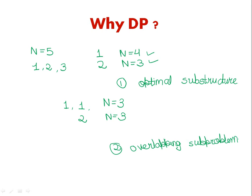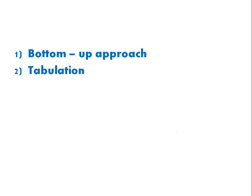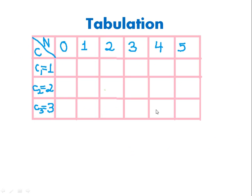This problem has both properties of DP, so we'll use dynamic programming here with a bottom-up approach and perform tabulation. Each column in the table corresponds to a sub-problem. To solve for n equals 5, we need n equals 4, 3, 2, 1, and finally 0 — the smallest sub-problem.